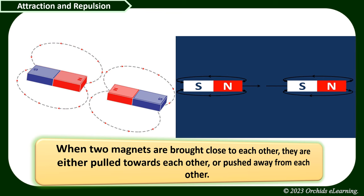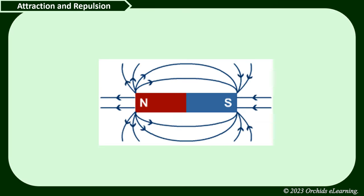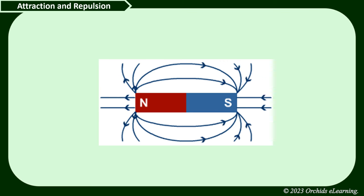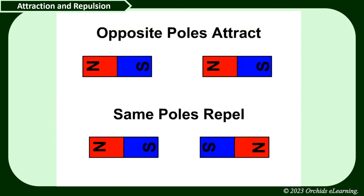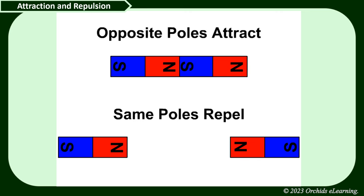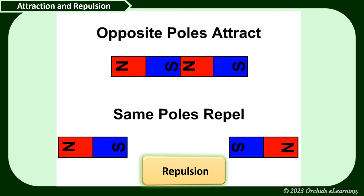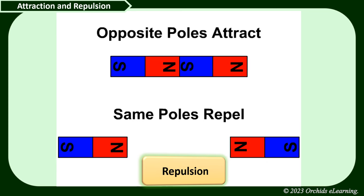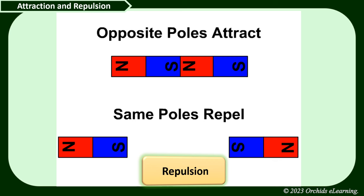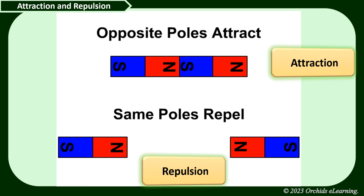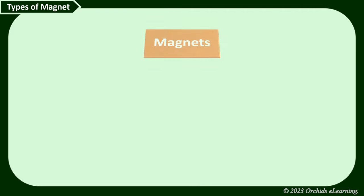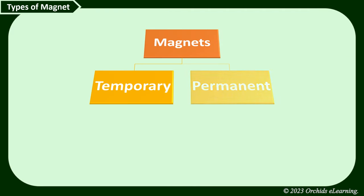When two magnets are brought close to each other, they are either pulled towards each other or pushed away from each other. Whether magnets attract or repel depends on which poles are facing each other. When like poles are brought close together, they repel — this is called repulsion. When unlike poles are brought close to each other, they attract — this is called attraction.